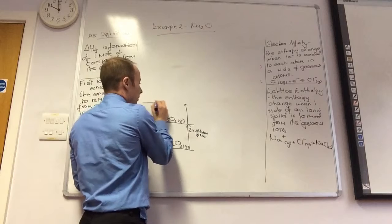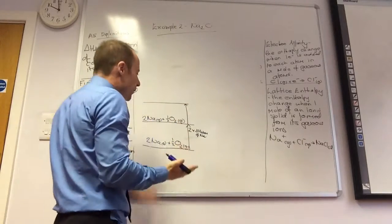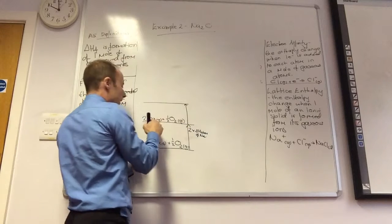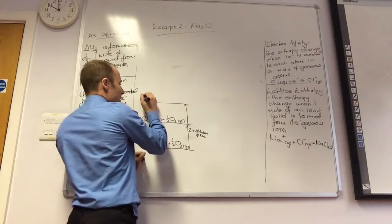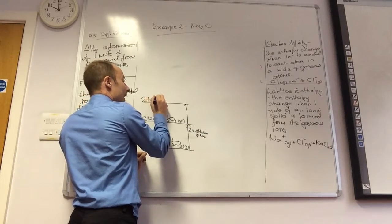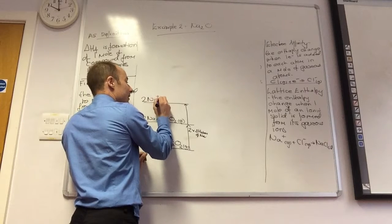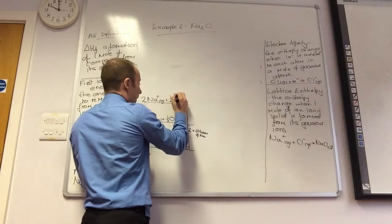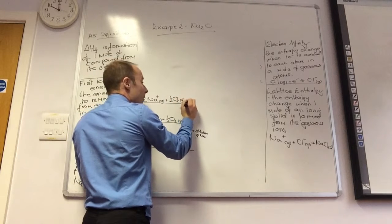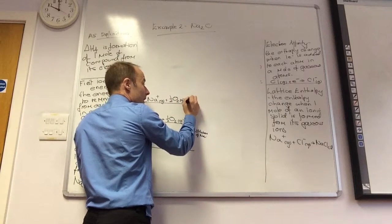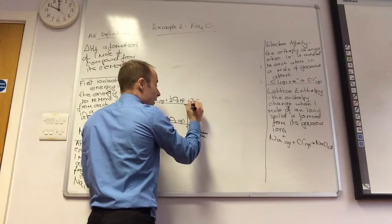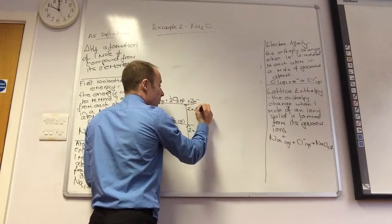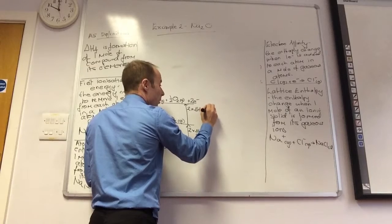Now let's ionise. I'm going to take my 2 Na gas and turn it into 2 Na⁺ gas. How many electrons am I going to now have? Plus 2 electrons. That's 2 times ΔH ionisation of sodium.